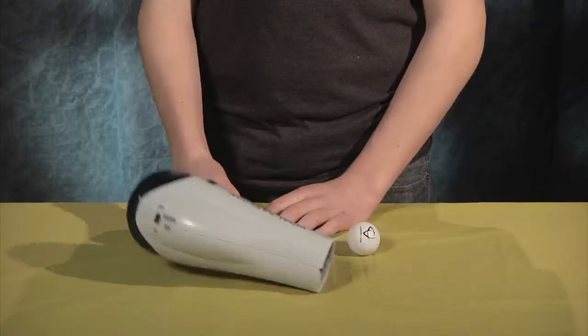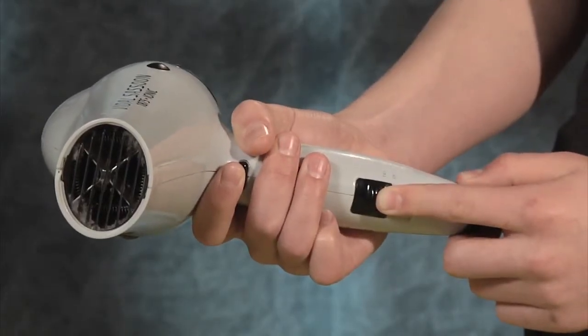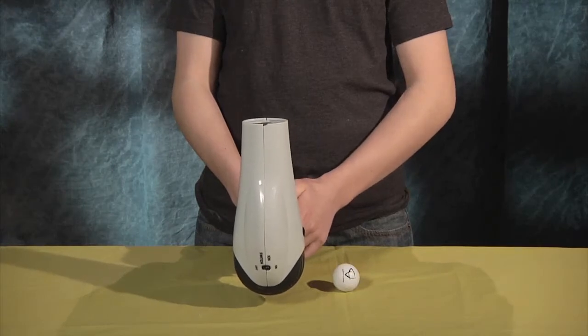The first object that we'll experiment with is the ping pong ball. To start, take your blow dryer and turn it on low. Make sure it's blowing cool air and not hot air. After turning on the blow dryer, take the end of it and point it upwards blowing air towards the ceiling.